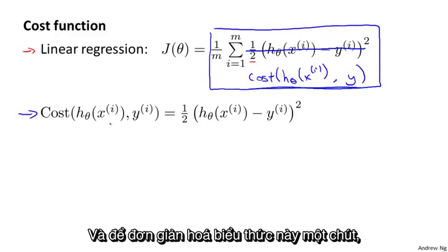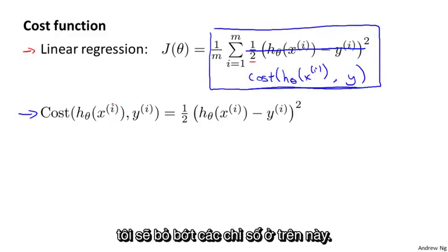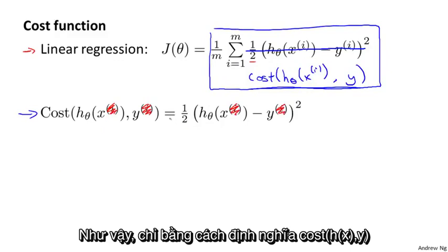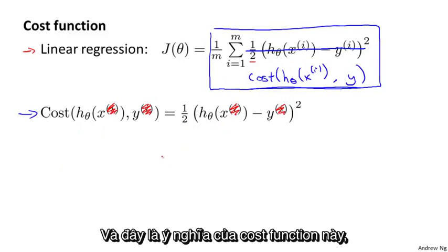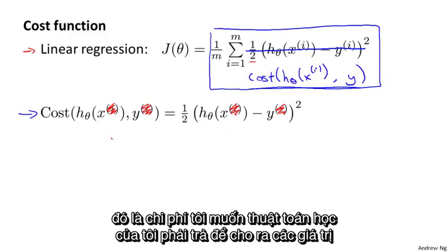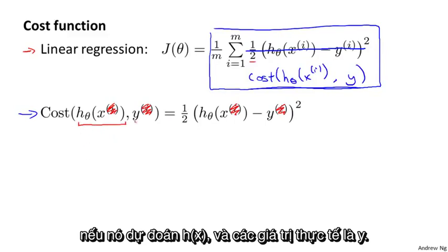To simplify further, define cost of h(x), y to be equal to one-half of the squared error. The interpretation is that this is the cost the learning algorithm pays if its prediction is h(x) and the actual label was y. For linear regression, the cost is one-half times the squared difference between what we predicted and the actual observed value of y.